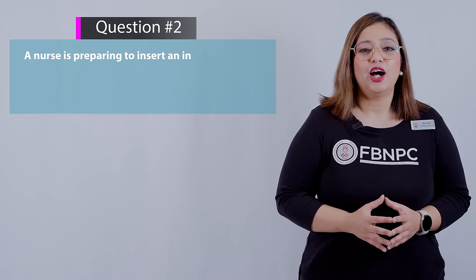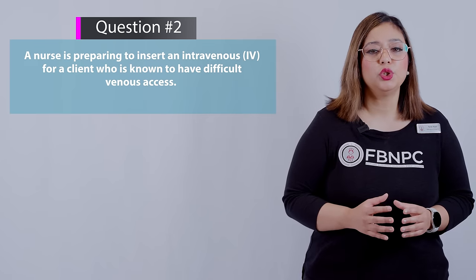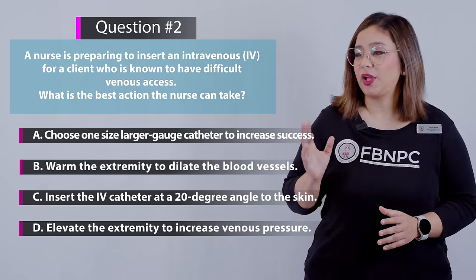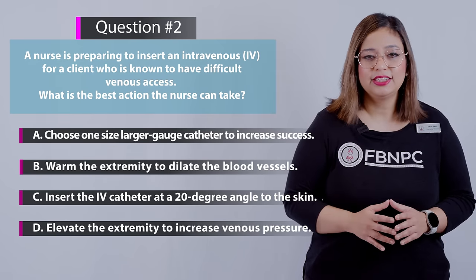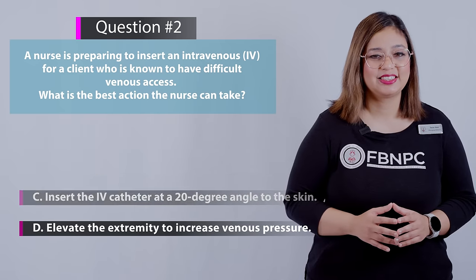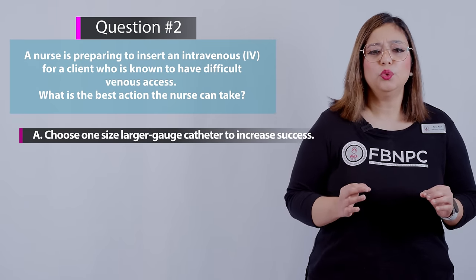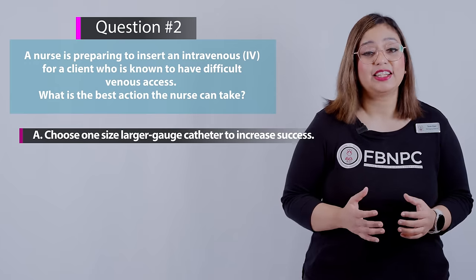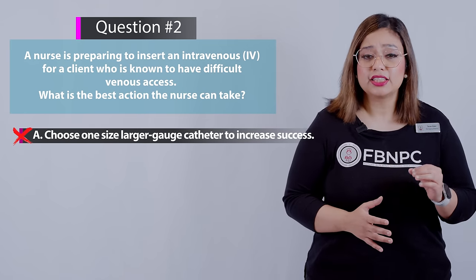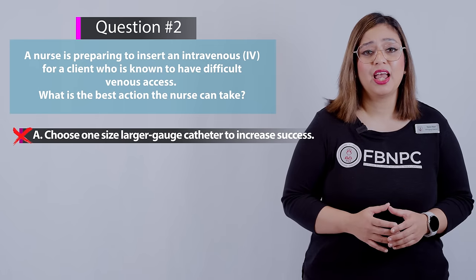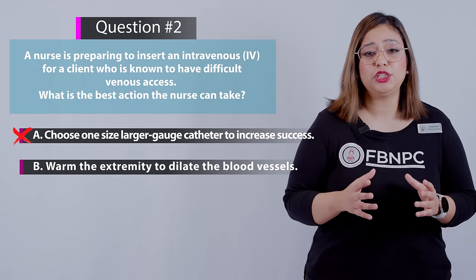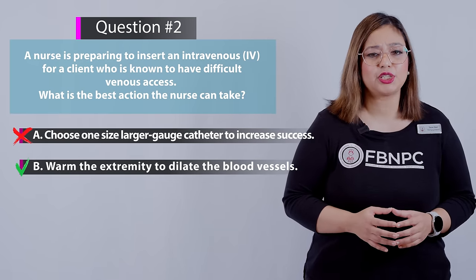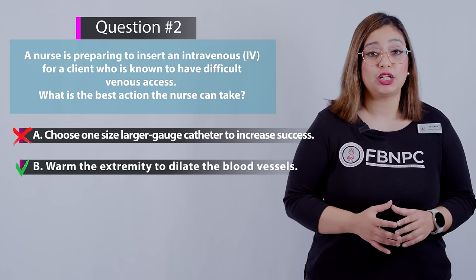Next question: A nurse is preparing to insert an intravenous line for a client known to have difficult venous access. What is the best action the nurse can take? Option A: Choose one size larger gauge catheter to increase success — incorrect, as this may actually increase the risk of complications such as infiltration and phlebitis. Option B: Warm the extremity to dilate the blood vessel — correct. This causes vasodilation and is a recommended action prior to starting an IV to increase your chances of visualizing the vein.